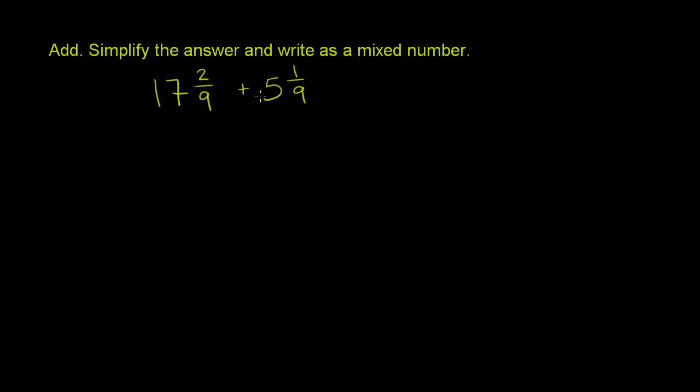Now there's two ways to do this. You could convert both of these into improper fractions, then add them, and then convert that back into a mixed number.